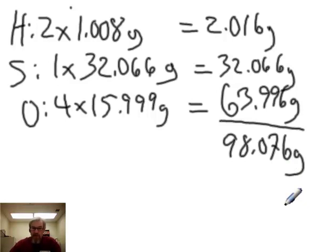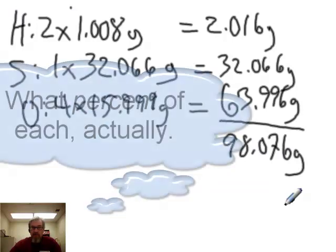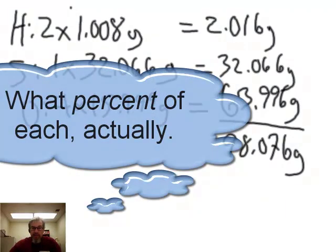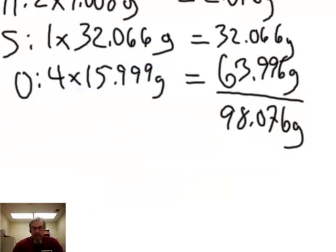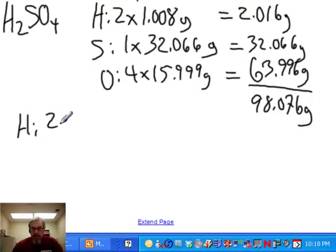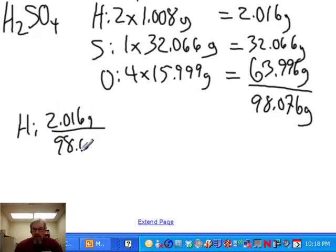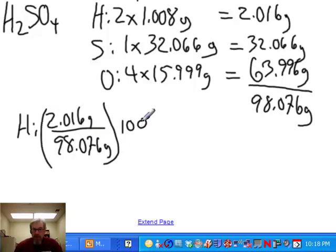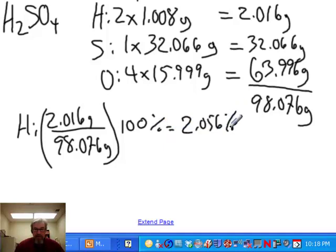Out of that total, some is hydrogen, some sulfur, and some is oxygen. To find what percent is hydrogen, take 2.016 grams divided by the total mass of 98.076 grams, then multiply by 100%. This comes out to 2.056%. Note that I'm keeping all significant figures from the 2.016.